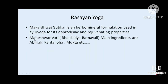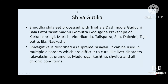Other rasayana yogas include Makardhvaja and Maheshwarvati, both mentioned in Bhaishajya Ratnavali in Dukkara Gadhikara. Makardhvaja is an accordant agent according to Ayurveda — it may boost kidney function and has been used by practitioners as a rasayana in chronic kidney diseases. Shiva Guttika is also one of the classical remedies in chronic diseases.